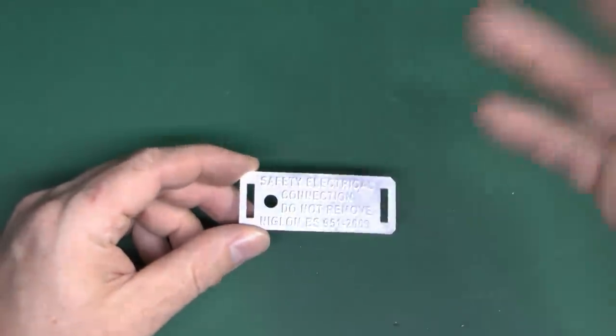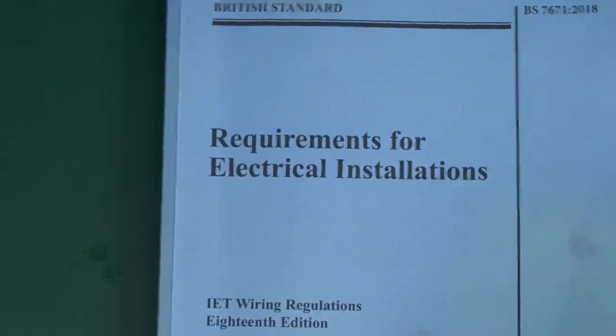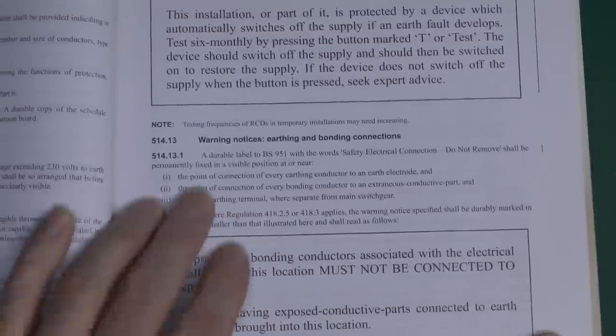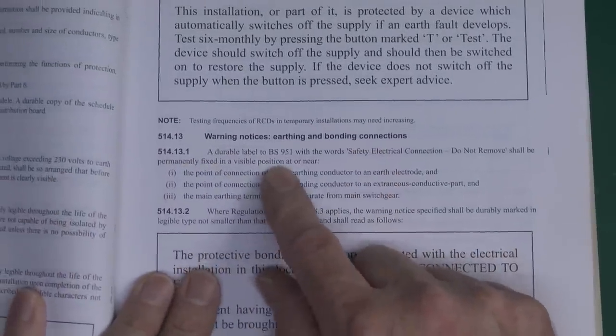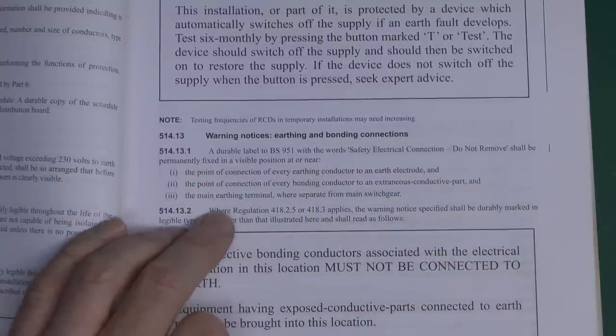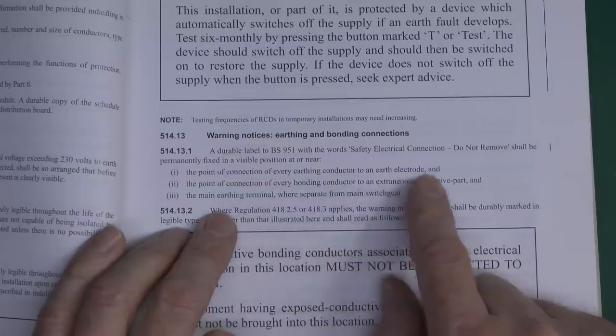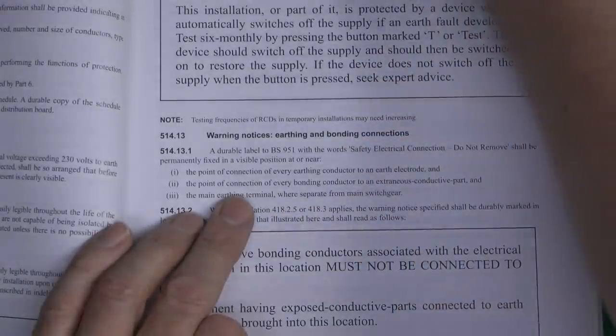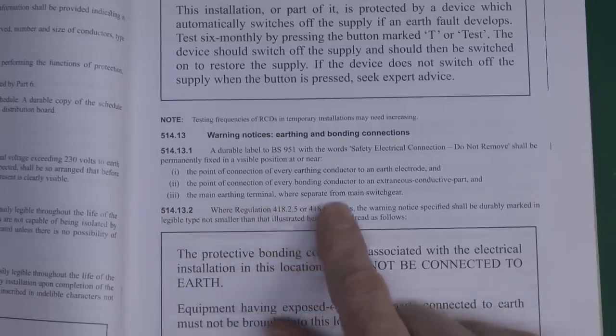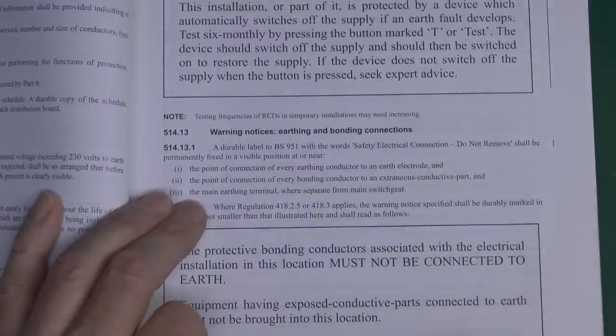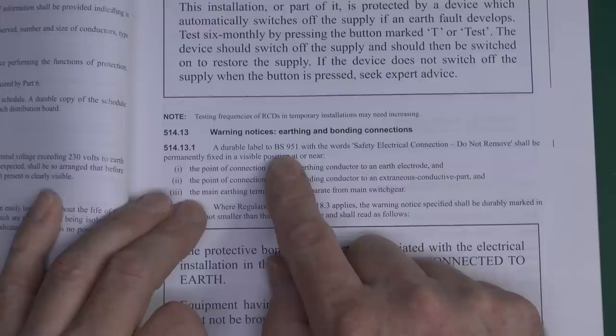Now BS951 only applies to this particular type of clamp, and the little labels that go with it. But there is another place that it is actually mentioned. So in the requirements of electrical installations, we have 7671. This is the blue one currently in force here. If you have a look here in the warning notices section. A durable label to BS951 with the words safety electric connection do not remove shall be permanently fixed in a visible position at or near various choices we've got there. First of all, the point of connection of every earthing conductor to an earth electrode. The point of connection of every bonding conductor to an extraneous conductive part. And that's basically where these things come in, as it's connecting it to your gas, water and other types of things. And also the main earthing terminal, where separate from the main switchgear. So if you've put a little earthing block separate, and then you've got the various conductors going off to your consumer unit or switchgear, whatever else you've got, then you do need to put a label there.